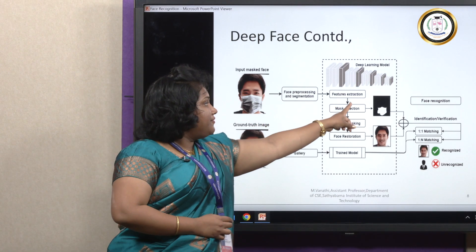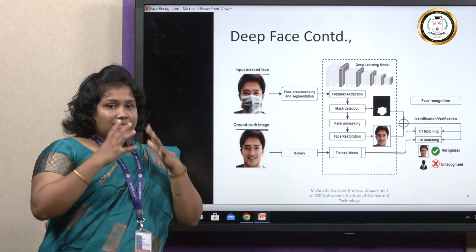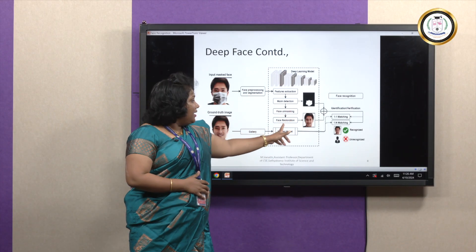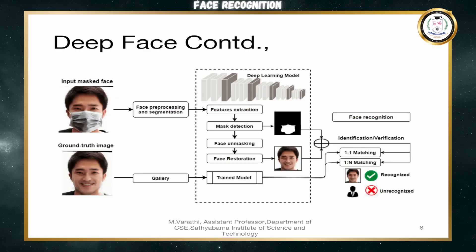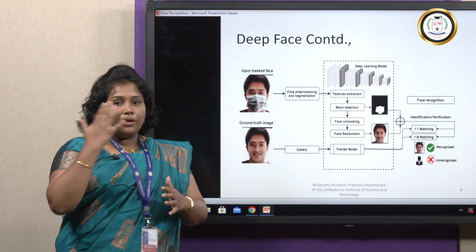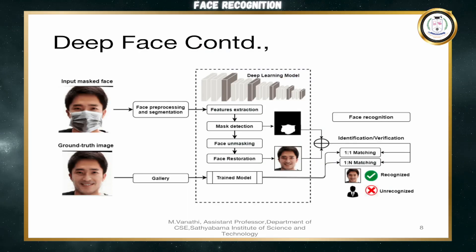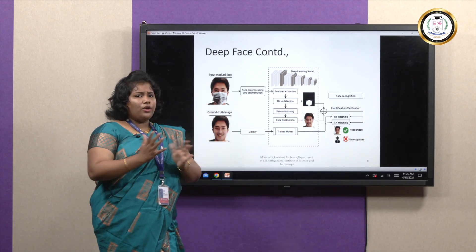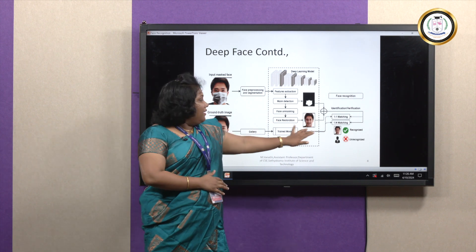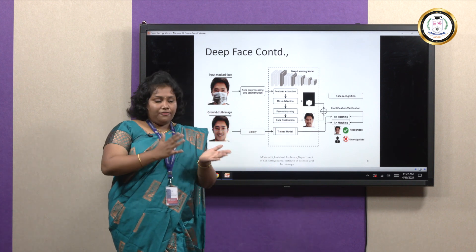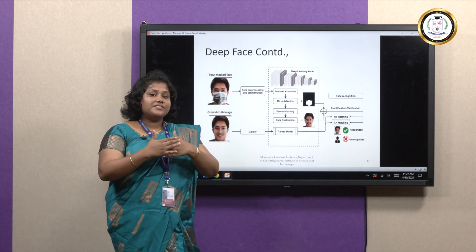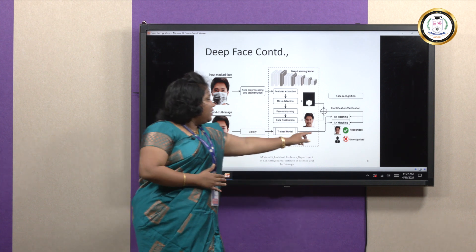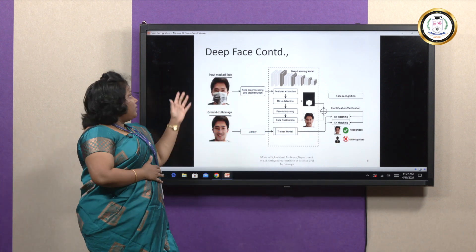After we extract those features, we move on to mask detection. If a mask is detected, we remove the mask. After removing the mask, we get the face unmasking image. Last is face reconstruction — the unmasked face output is called the face reconstruction output. This then goes into the final step, where we match the gallery image with the face reconstruction image to verify if they are the same one-to-one. If the given image and gallery image are the same, it gives a one-to-one match — recognized. If not the same, it gives the message unrecognized.